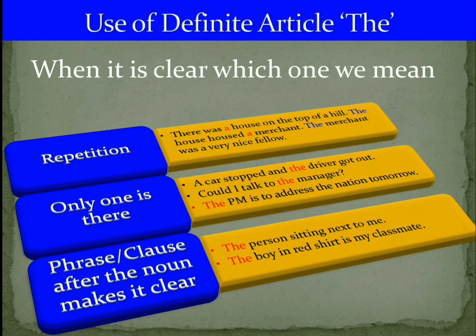Another example: 'The PM is to address the nation tomorrow.' If I say 'the PM', it is crystal clear which person I mean — our Prime Minister. When only one such thing exists and it is clear, we use 'the'.